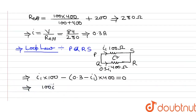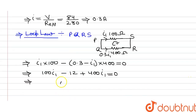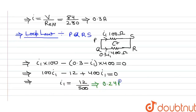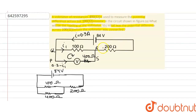Expanding the equation: 100·i1 minus 12 plus 400·i1 equals 0, giving 500·i1 equals 12. Solving, i1 equals 12 divided by 500, which gives us 0.24 ampere. This is the current flowing through the 100 ohm resistor.